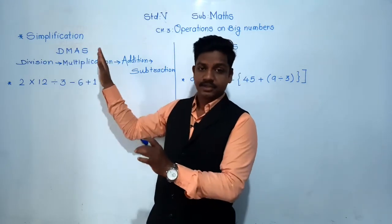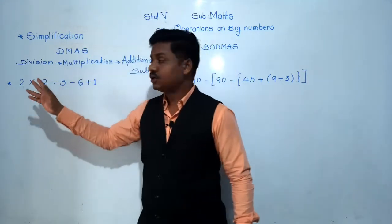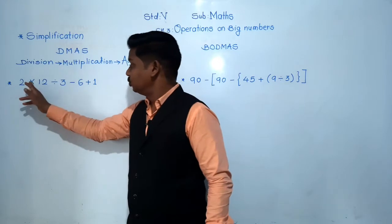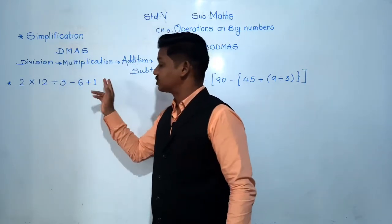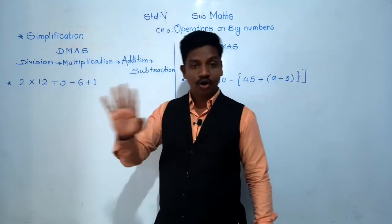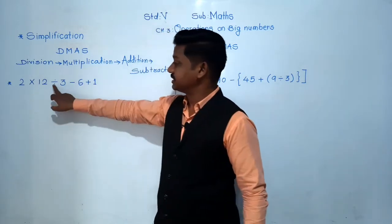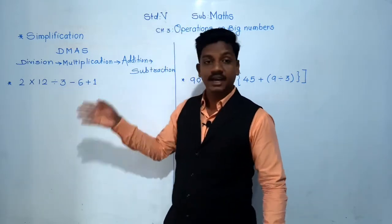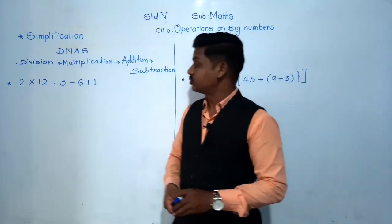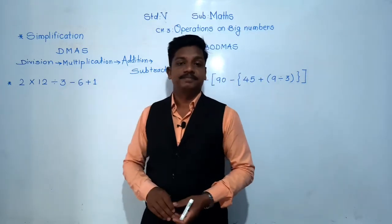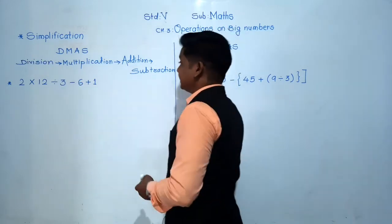See this example: 2 × 12 ÷ 3 − 6 + 1. All four operations are present — there is multiplication, division, subtraction, and addition. So how do we solve this example? Let's see.